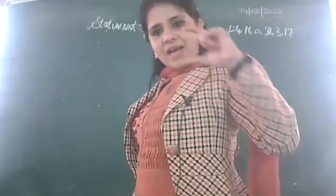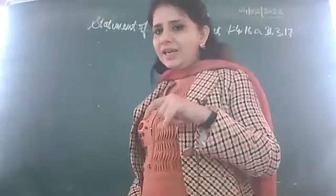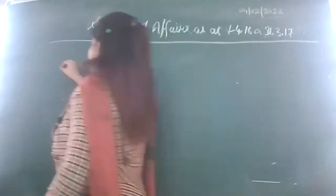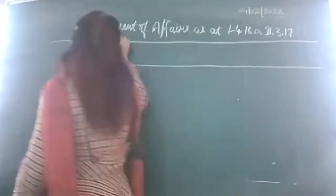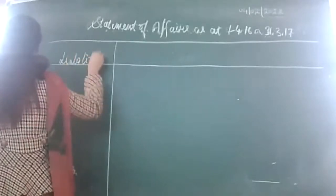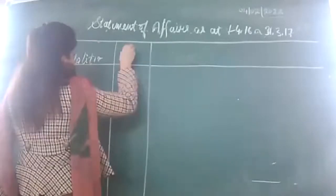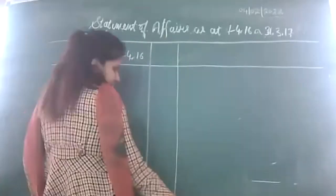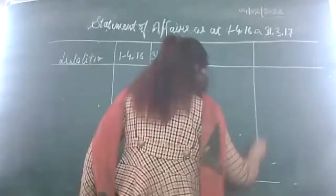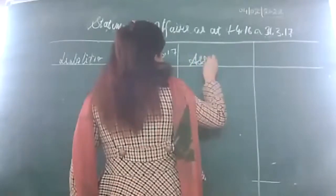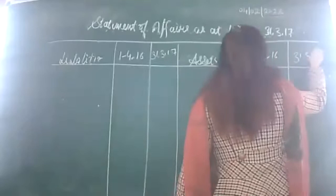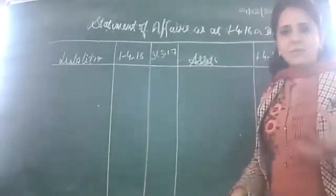Let's prepare statement of affairs as at first April 2016 and 31st March 2017. We will be preparing it in a combined form. This is for liabilities - 1st April 16 and 31st March 17. This is for assets - same pattern. Now we just have to copy the items and write the amounts here.